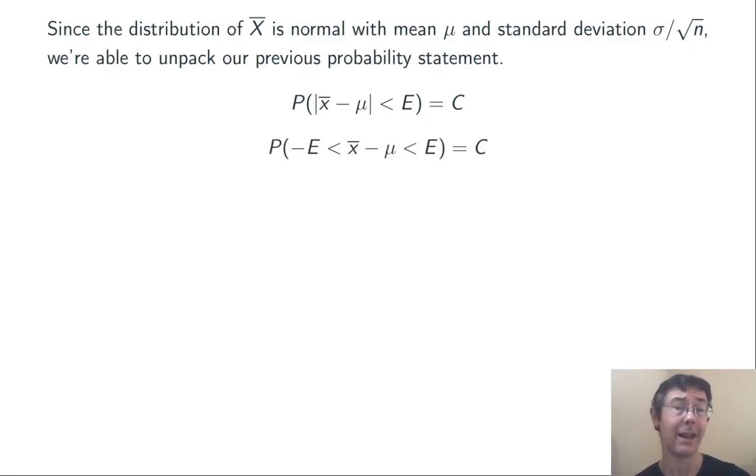First of all, let's do away with that absolute value. If the absolute value of something is less than a number, that means that that something has to be less than the number and greater than negative the number.